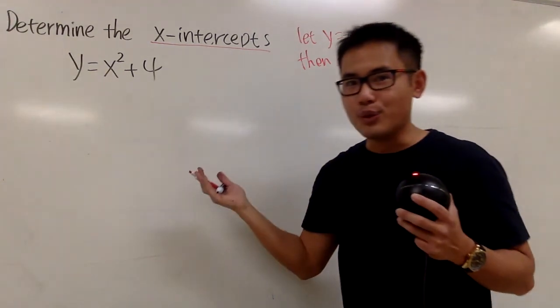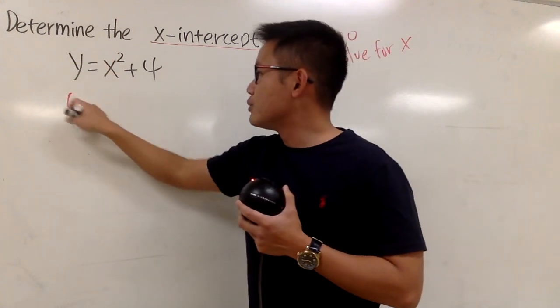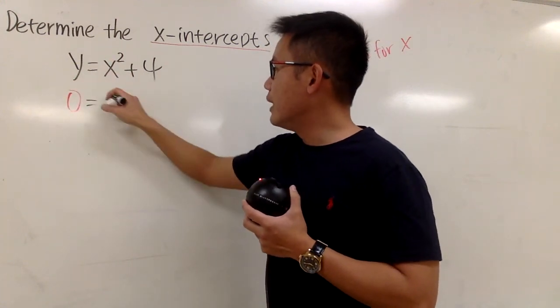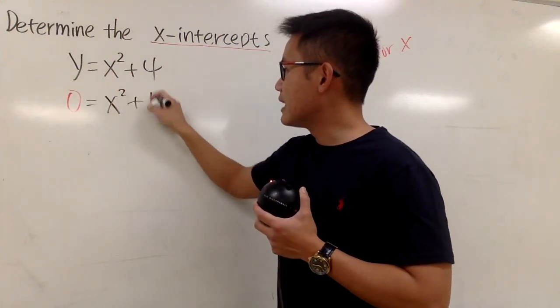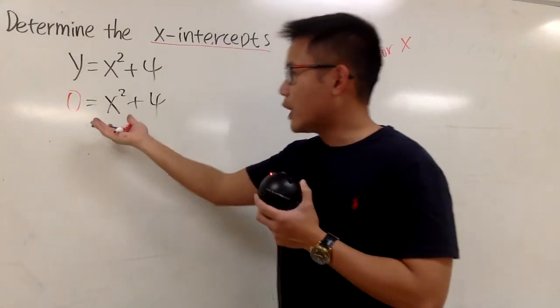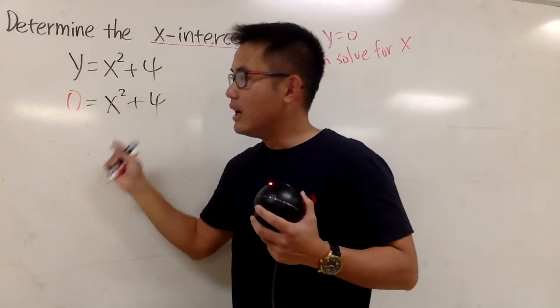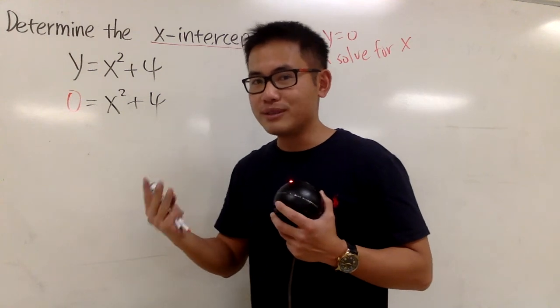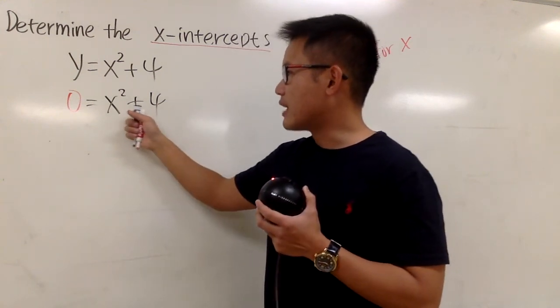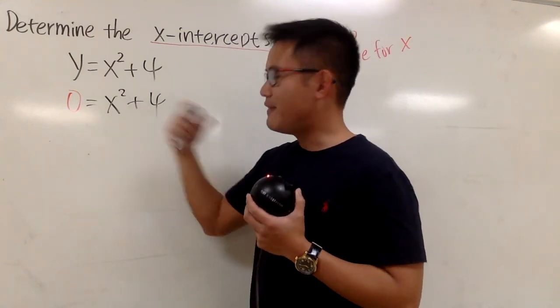Now let's do the work. Put down 0 for y, and this equals x² + 4. How can we solve this equation? The right-hand side doesn't have three terms, and this is actually the sum of two squares. It's not factorable.